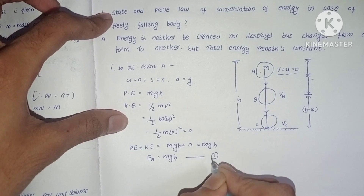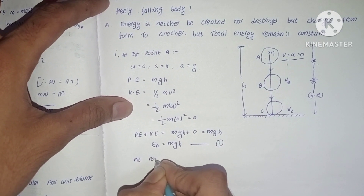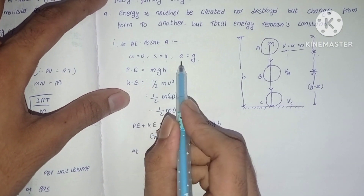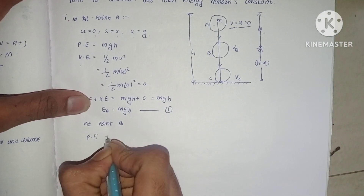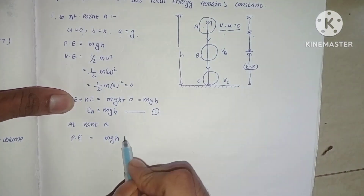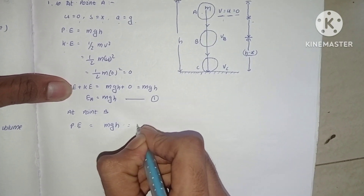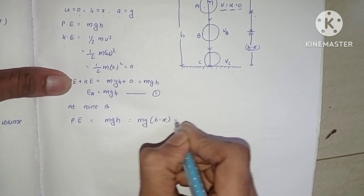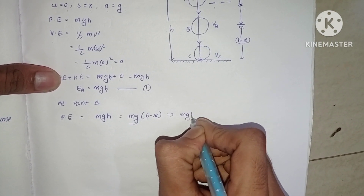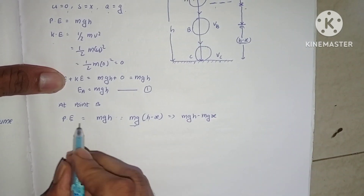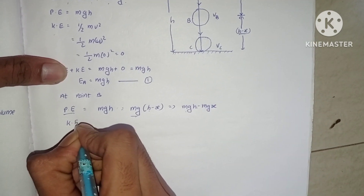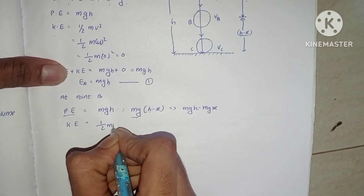At point B: u = 0, s = X, a = g. The height at B is H minus X, so potential energy PE = mg(H minus X) = mgh minus mgx. Kinetic energy KE = half m v squared. We use v squared minus u squared = 2as to find v squared.